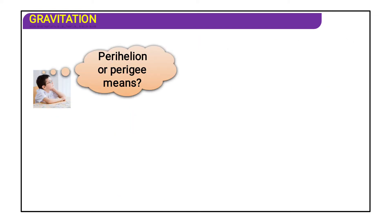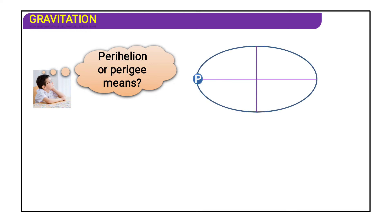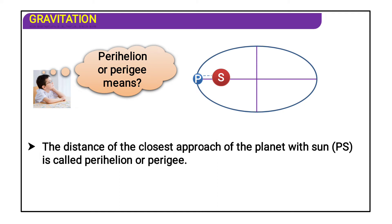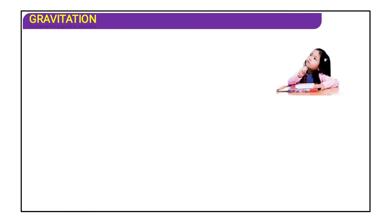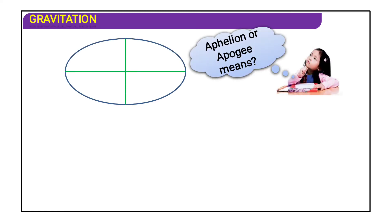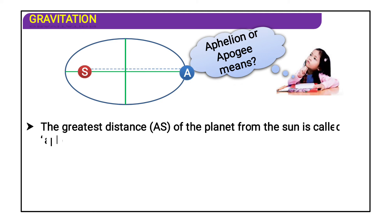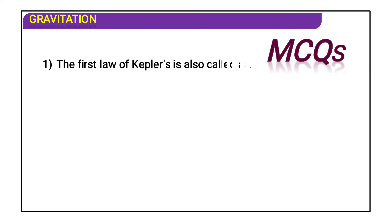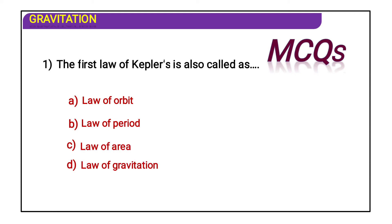Perihelion or perigee means the distance of the closest approach of the planet to the sun — the distance between P and S is called perihelion or perigee. Aphelion or apogee means the greatest distance between the planet and the sun, as shown in the diagram. MCQ: The first law of Kepler is also called the law of orbit. Answer: law of orbit.